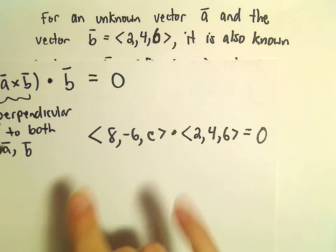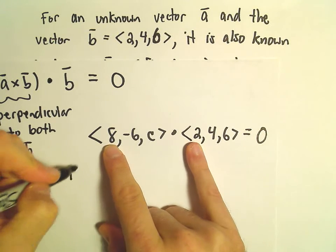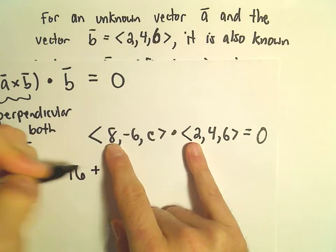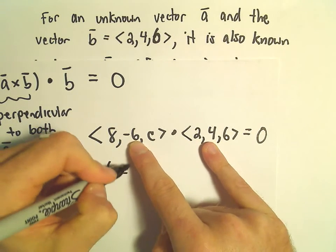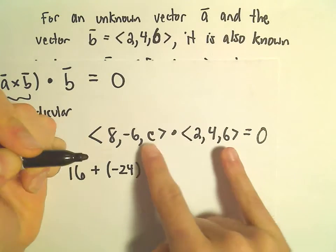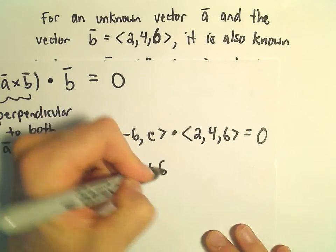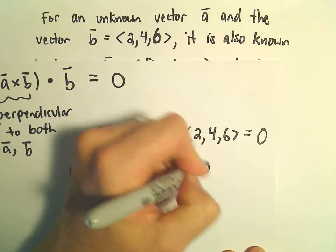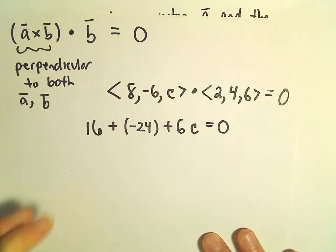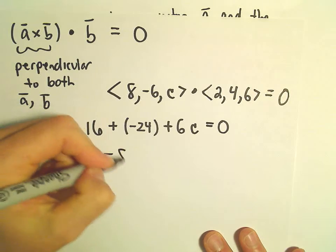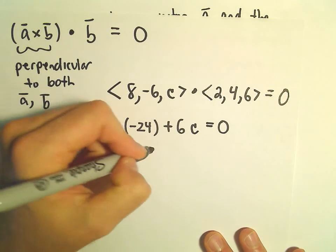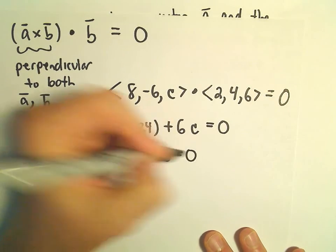What we can do is multiply respective components. So 8 times 2 will be 16, plus negative 6 times 4, which will be negative 24, plus c times 6, which will be 6c. And now we can simply solve this for c. So 16 minus 24 will be negative 8, plus 6c equals 0.